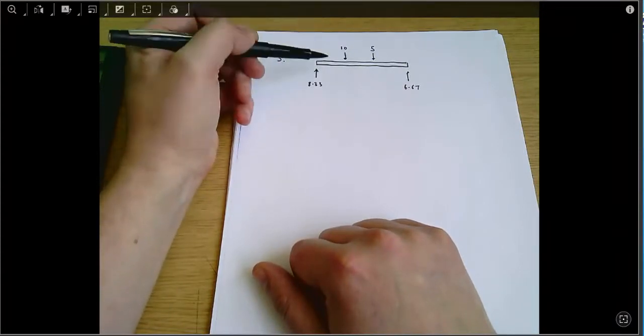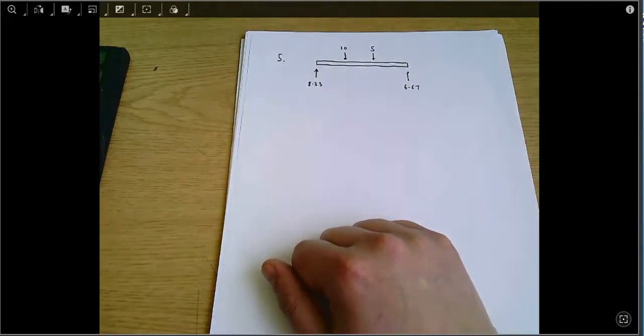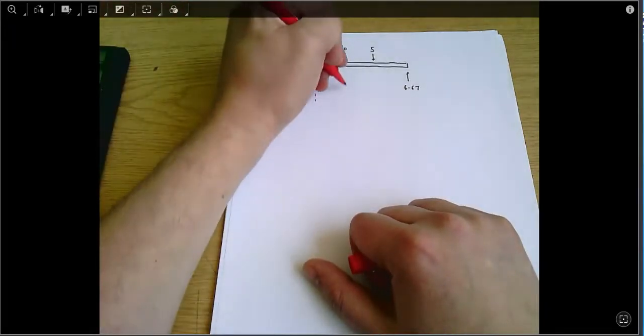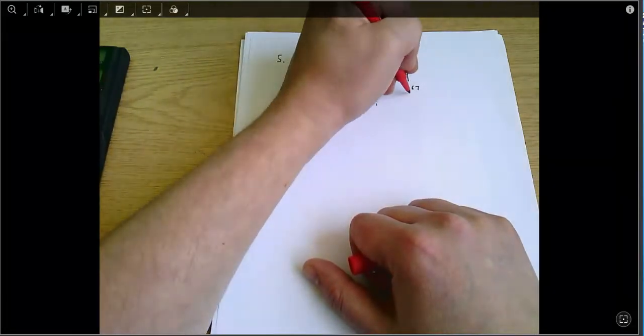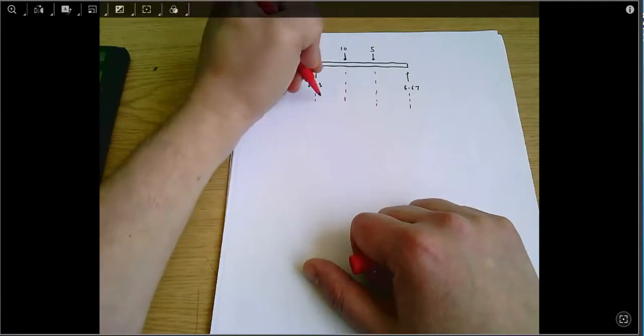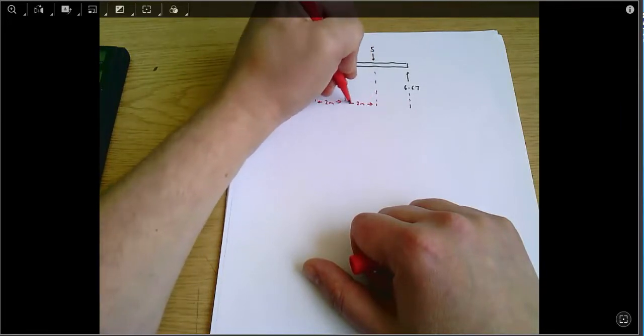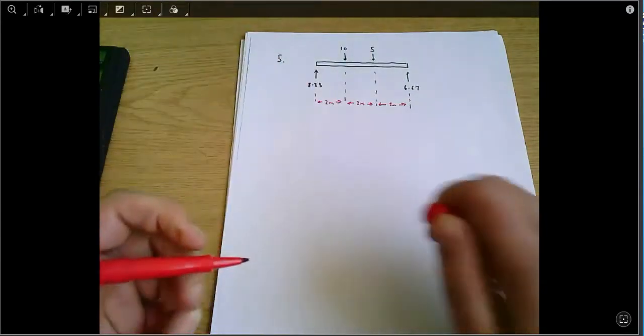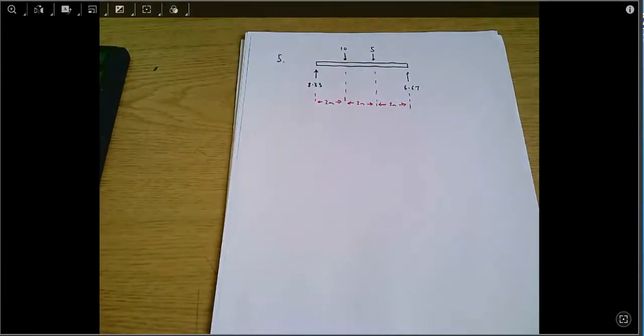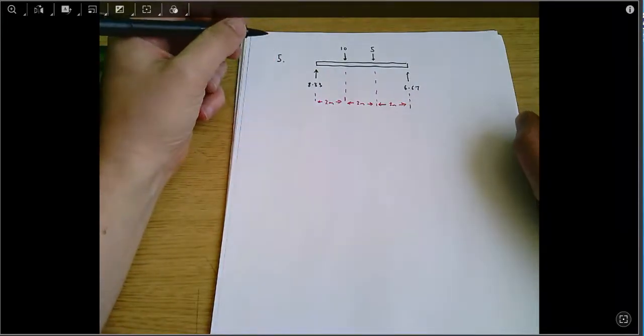So to go through the method of sections what we need to do is essentially divide this beam up into three components, three areas of interest. At each force the shear force within the beam might change, but between point loads the shear force within the beam is going to be constant. We know that from the set of rules that are in the lecture notes on beam theory.